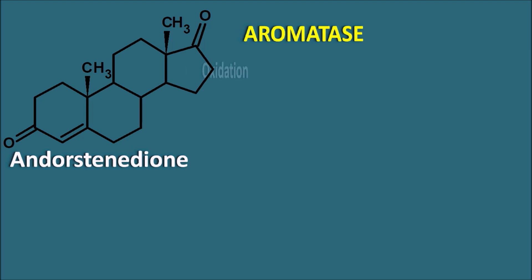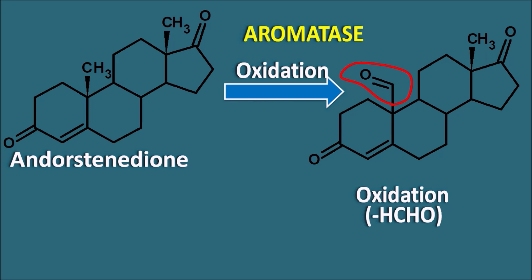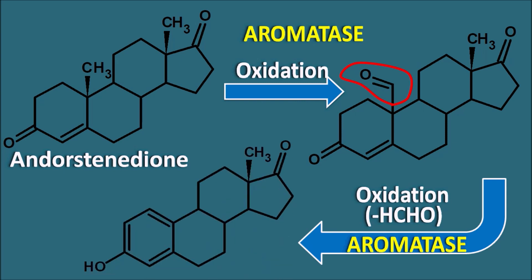The first step in aromatase action is oxidation: the methyl group at the 19th position is oxidized to an aldehyde functionality. This undergoes further oxidation and cleavage such that the formaldehyde group is removed, and the aromatase enzyme introduces another double bond. Simultaneously, the ketone is converted to an enol, producing one more double bond — and together these two new double bonds make the ring aromatic, producing estrone. Estrone is the first estrogen biosynthesized in this pathway.